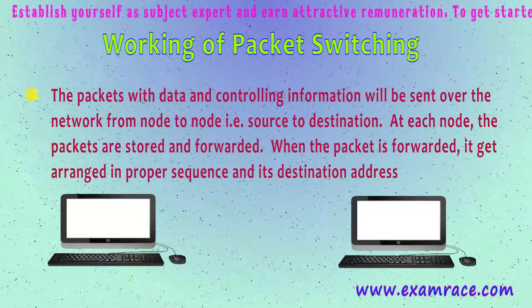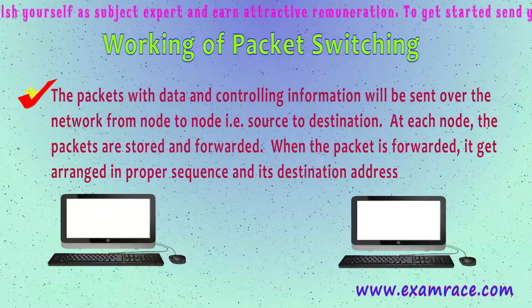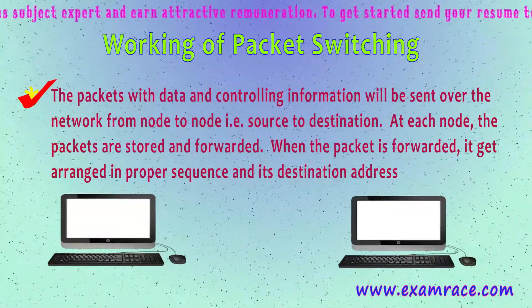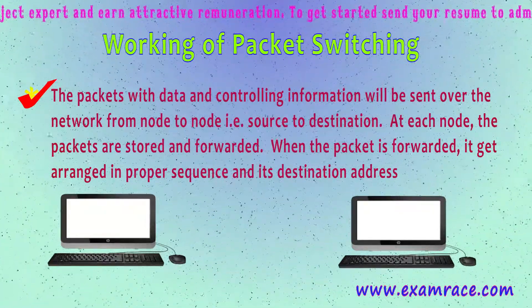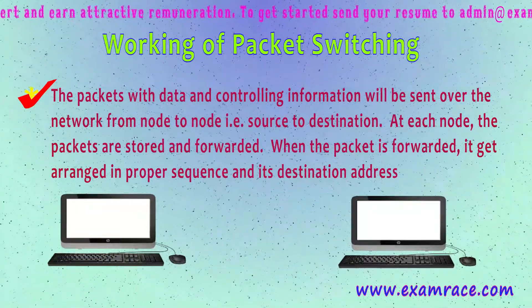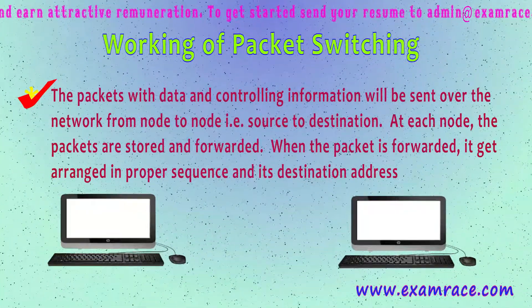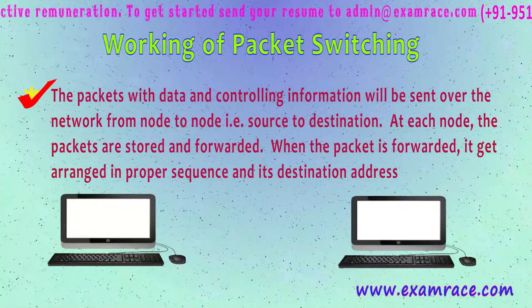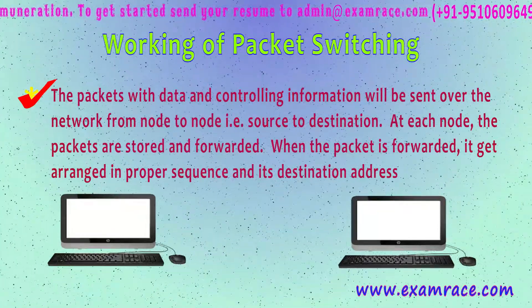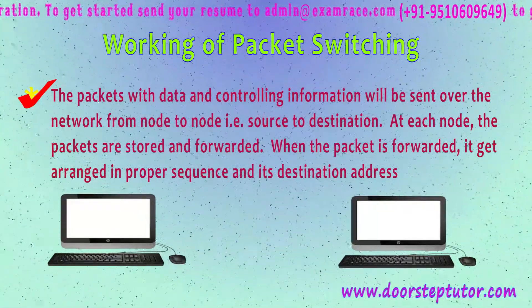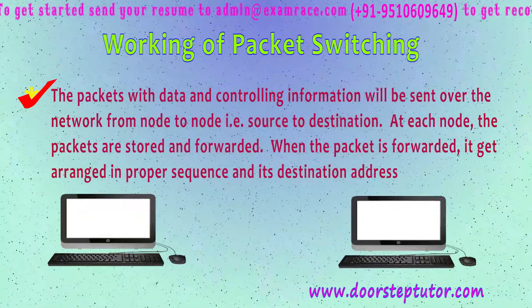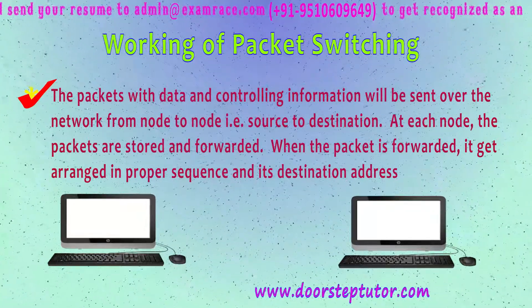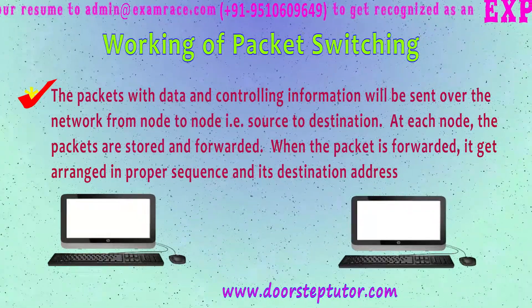In the working of packet switching, packets with data and control information are sent over the network from one node to another — from source to destination. At each node, the packets are stored and forwarded: the packet is stored for some time, and when the route is free, that packet is forwarded to the other side. When forwarded, packets get arranged in proper sequence according to the destination address.